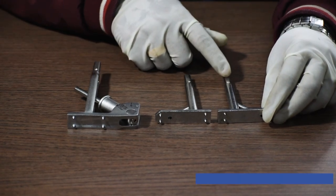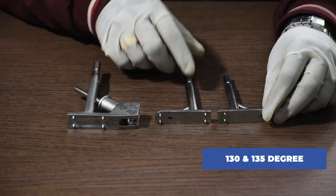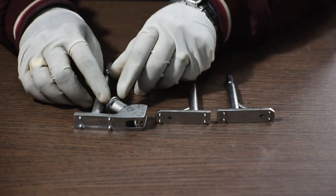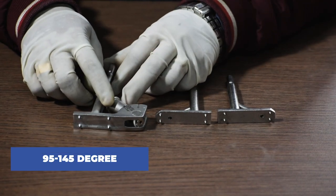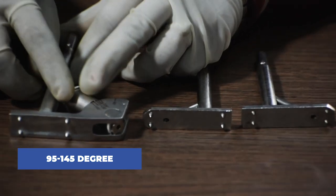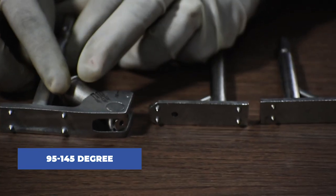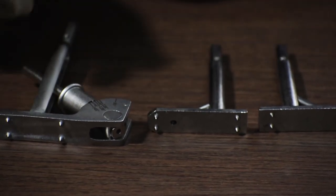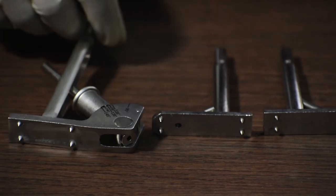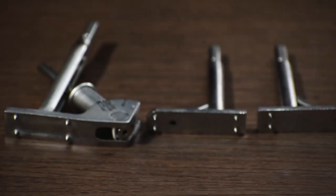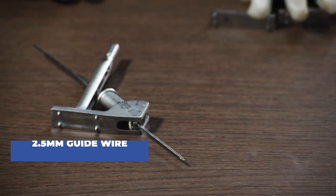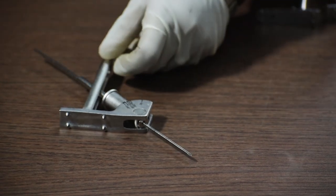Fixed Angle Guides are available in 130 and 135 degree. For Variable Angle Guides it ranges from 95 degree to 145 degree. Starting from 95 degree then 130, 135, 140 and 145 degree respectively. It is mentioned in the surface of the Angle Guide. The purpose of the Angle Guide is to help us insert the guide wire in a particular angle required for the surgery.